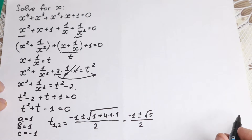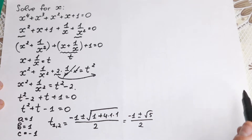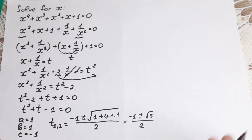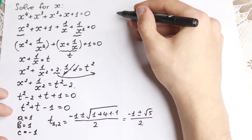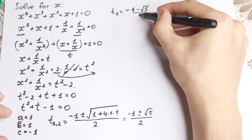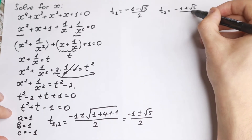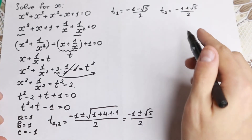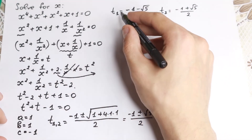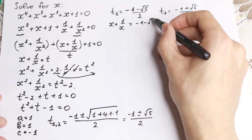We will have two cases. So our two values are: t₁ = (−1 − √5) / 2 and t₂ = (−1 + √5) / 2. Going back to our substitution x + 1/x = t, for the first case: x + 1/x = (−1 − √5) / 2.